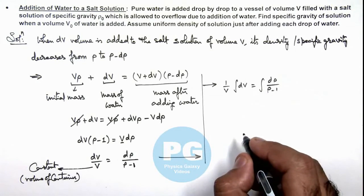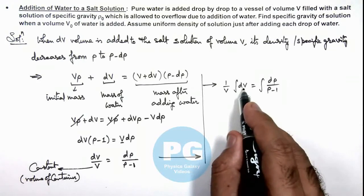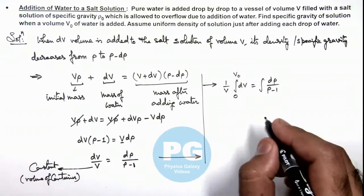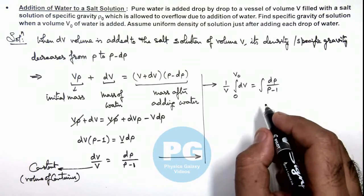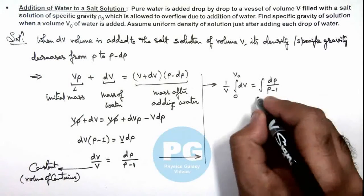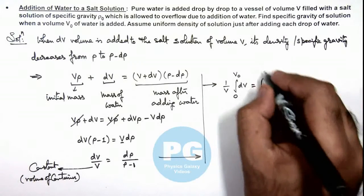Now in this situation, the volume of water added can be integrated from zero to V₀, and the density we can write: initial density of salt solution, the specific gravity is given as ρ₀, which finally becomes ρ.